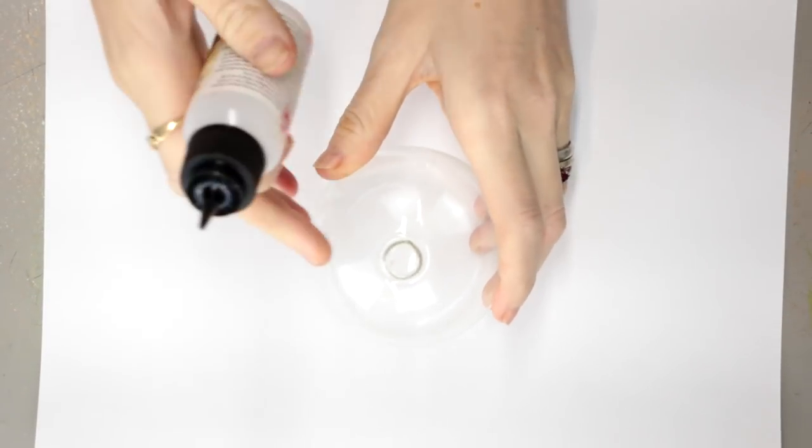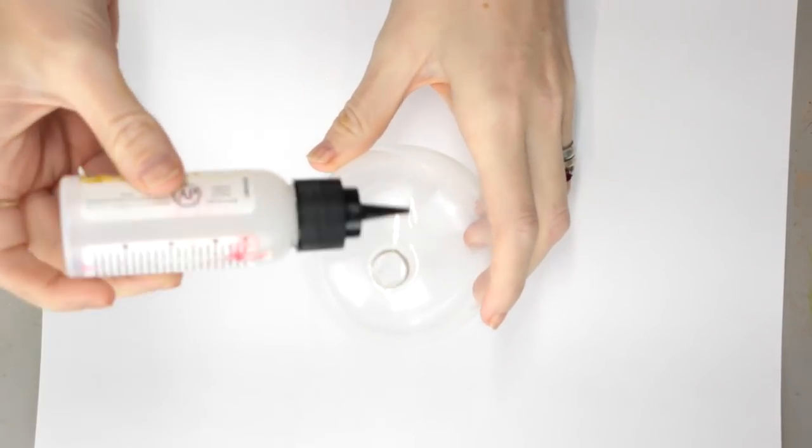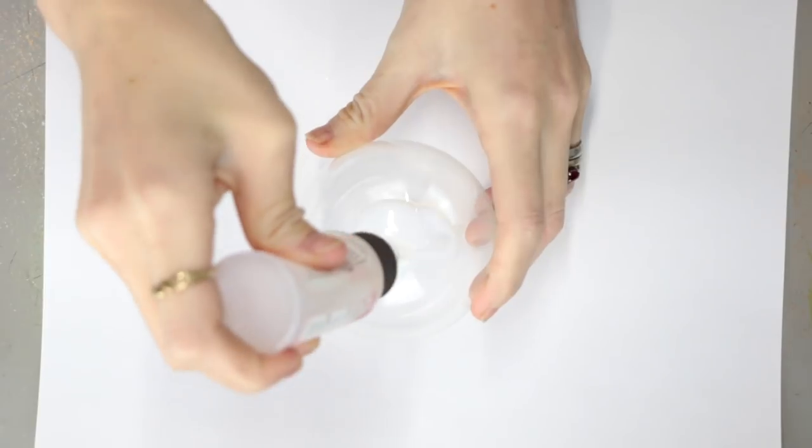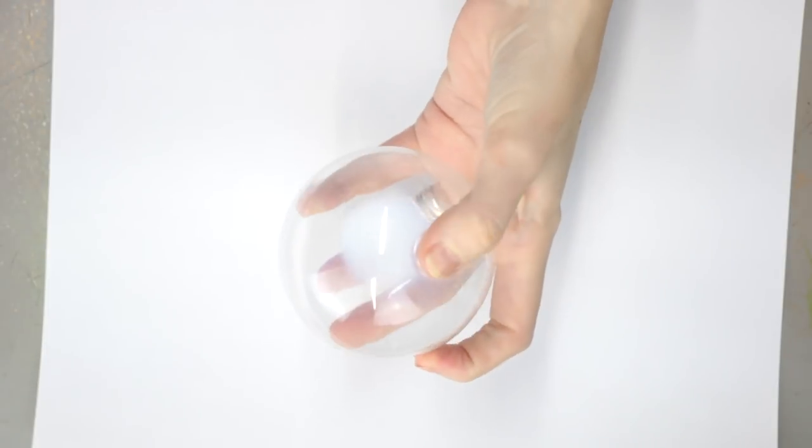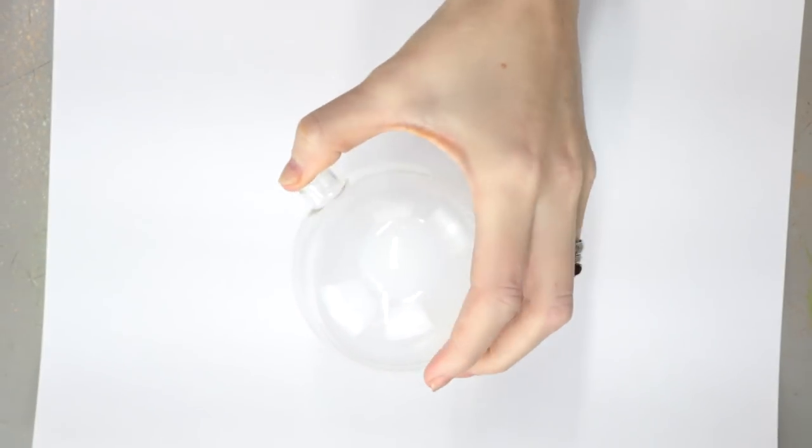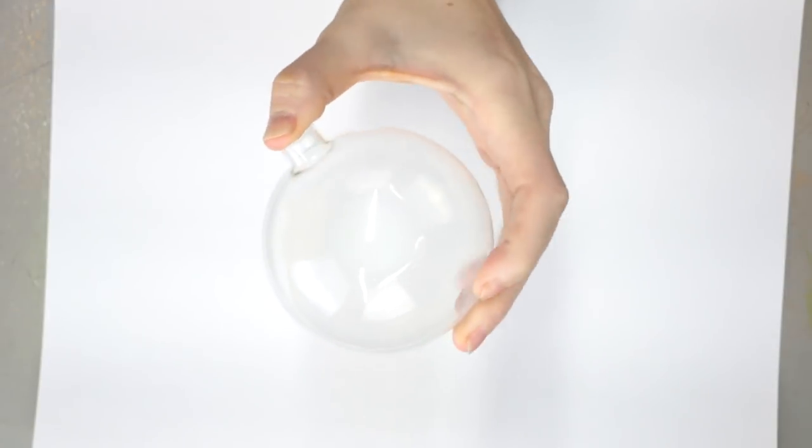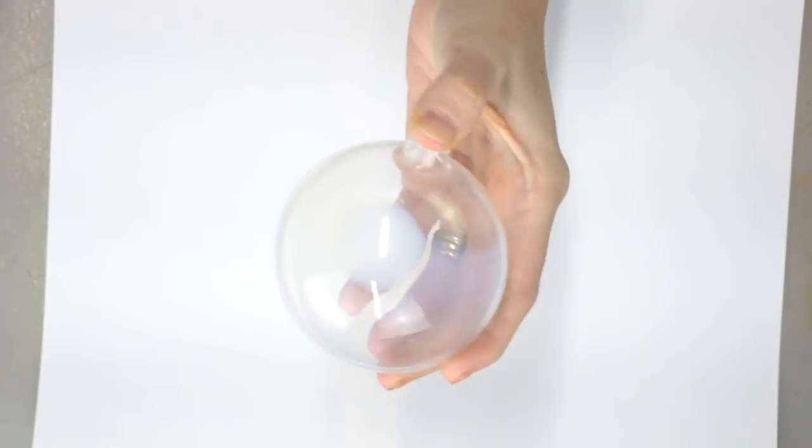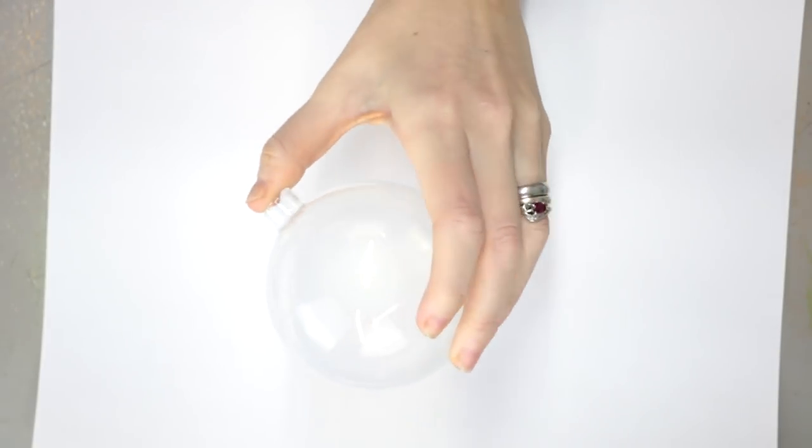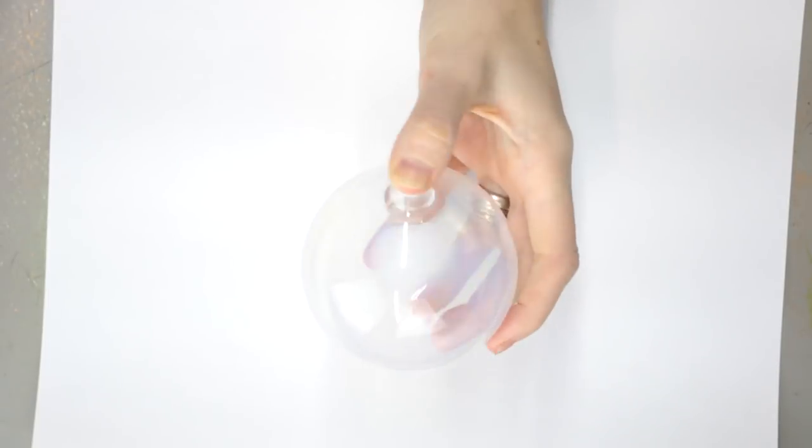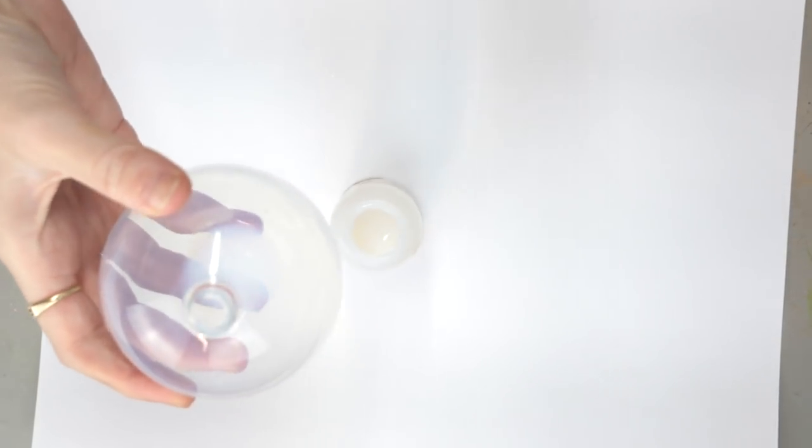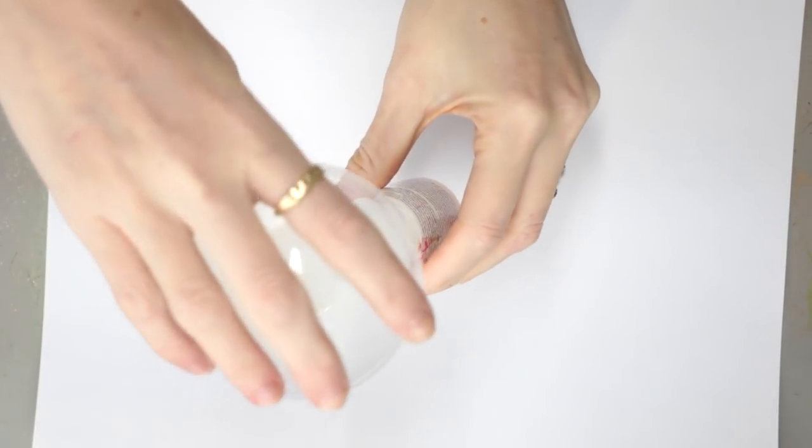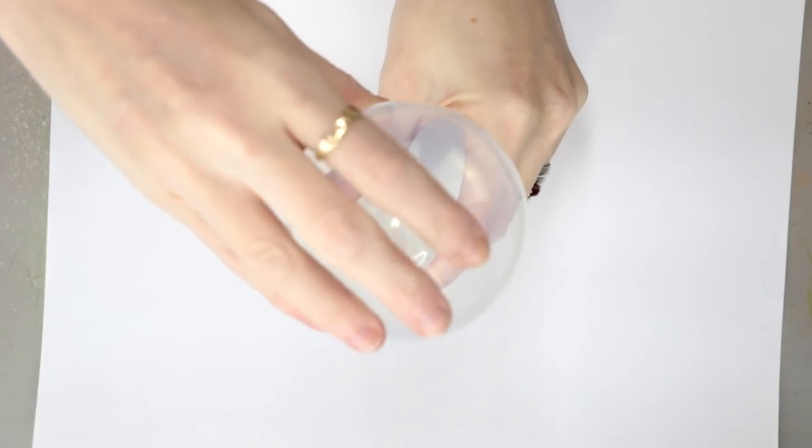So I've got my first glass bauble here and my Ornament Glitter Adhesive. I'm just going to squirt the adhesive into the bauble. I'm then going to put my thumb over it and start moving the liquid all the way around. It's got a milky consistency so you can definitely see where it's coating. Once you're satisfied the entire inside is coated, we're just going to pour the excess back into the jar.